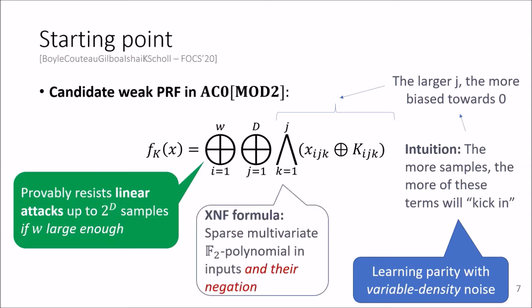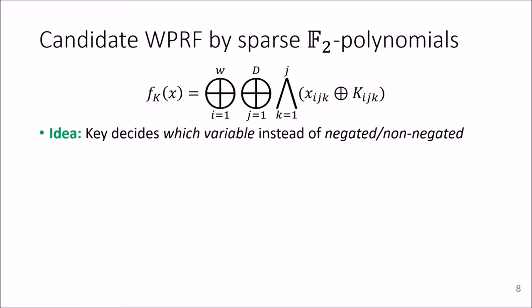And as already mentioned, the XNF formula is basically sparse multivariate F2 polynomial in inputs and their negation. So what we want to do in this work is getting rid of the negation part.